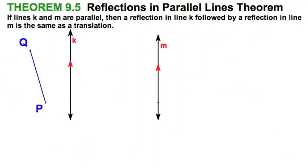Here's an interesting theorem that has to do with composite transformations. We're going to discuss reflections in the parallel lines theorem from our textbooks. That's Theorem 9.5 in Chapter 9. So we're going to start with a pair of parallel lines. I've got line k parallel to line m.